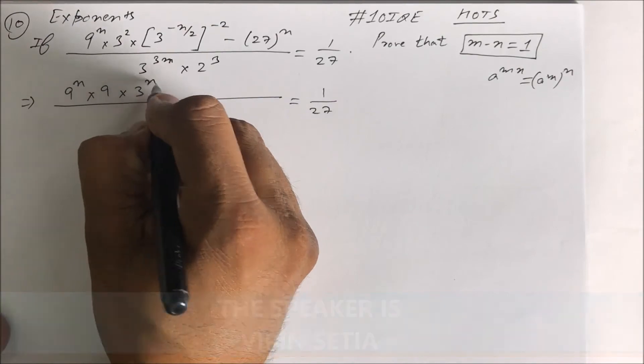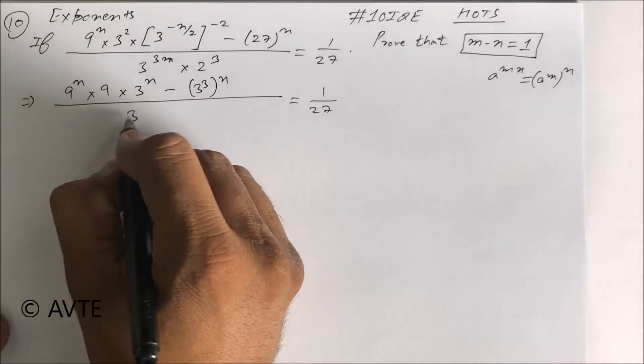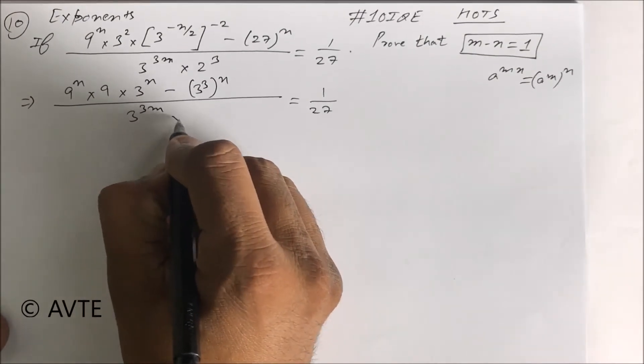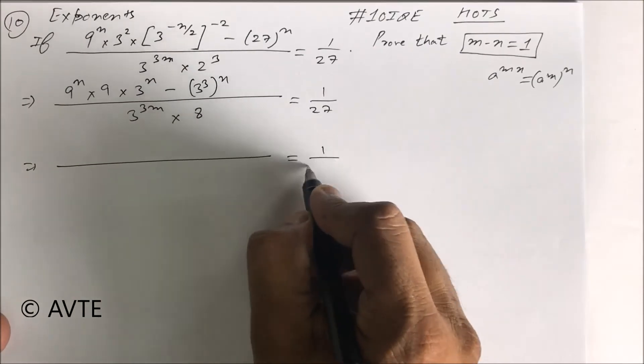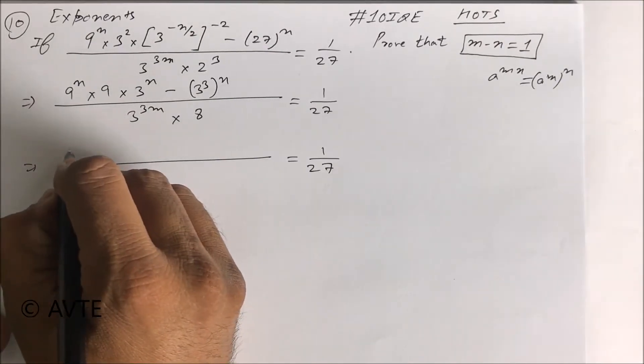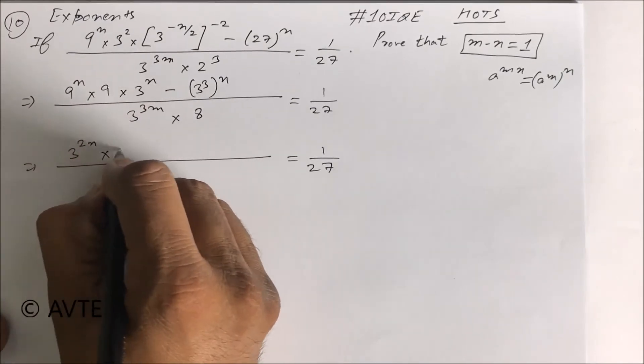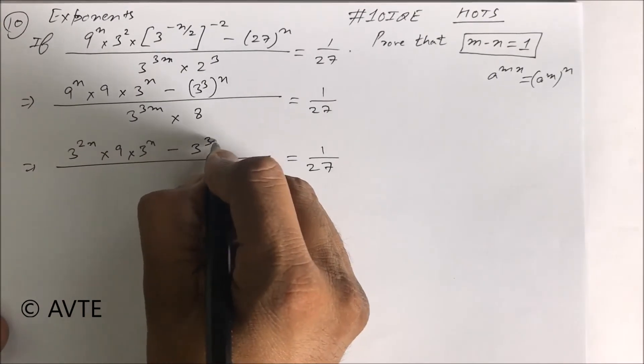I told each and every law while using that law in the particular question. So this is 3 raised to power n minus this 3 raised to power 3m into 8. You have to be careful while doing every question. So this is 9 raised to power n, we can write down 3 raised to power 2n into 9 into 3 raised to power n.